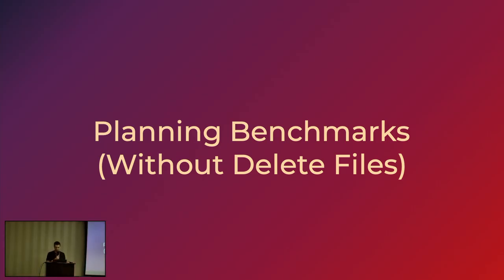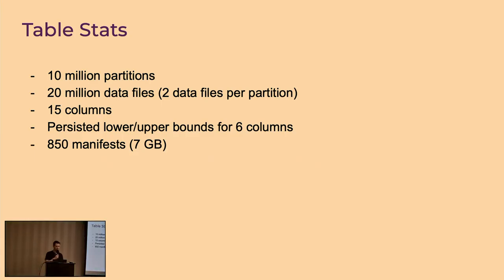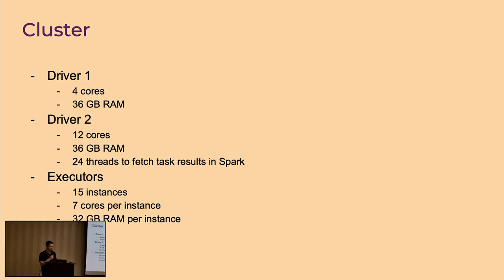I tested this on a table with 10 million partitions and two data files per partition, giving 20 million data files total. The table had 15 columns with lower and upper bounds persisted for 6 of them, requiring 850 manifests and a little over 7 GB of metadata. I tested two driver configs: the first had 4 cores and the second had 12 cores, both with 36 GB of RAM. For the larger driver, I also configured the number of threads to fetch task results, which is useful for distributed planning. Both configurations used 15 executors with 7 cores per instance and 32 GB of RAM.